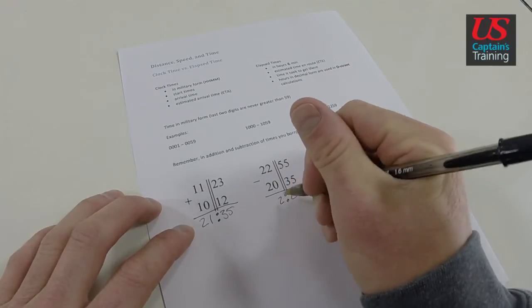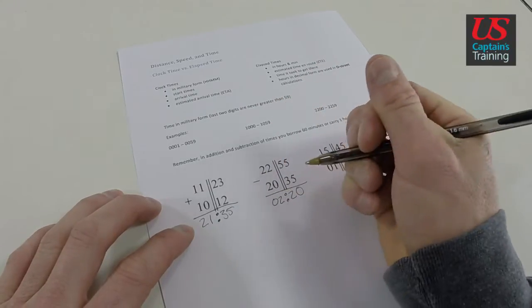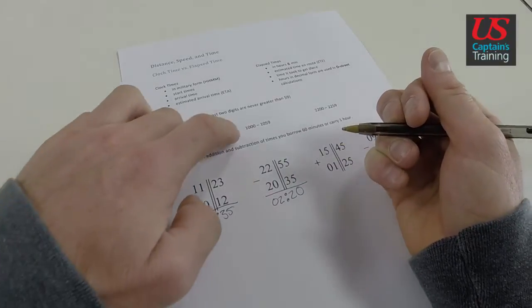And now 2 minus 0 is 2. 2 minus 2 is 0. Good. And now let's look at these.